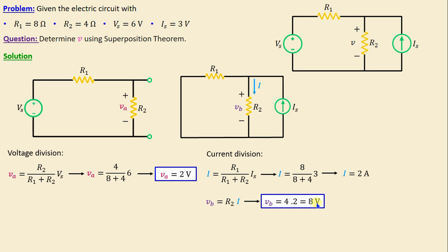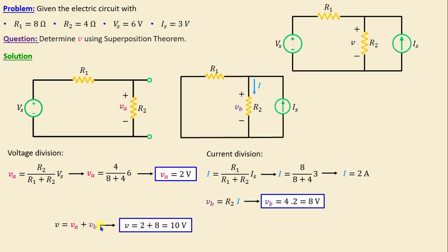After completing the analysis of each independent source while treating the others as turned off, the subsequent step is to combine the results algebraically. This process enables us to find the overall circuit response. That means the voltage V across the resistor R2 is equal to VA plus VB, and if we replace VA and VB with their numerical values, we obtain V is equal to 10 volts.